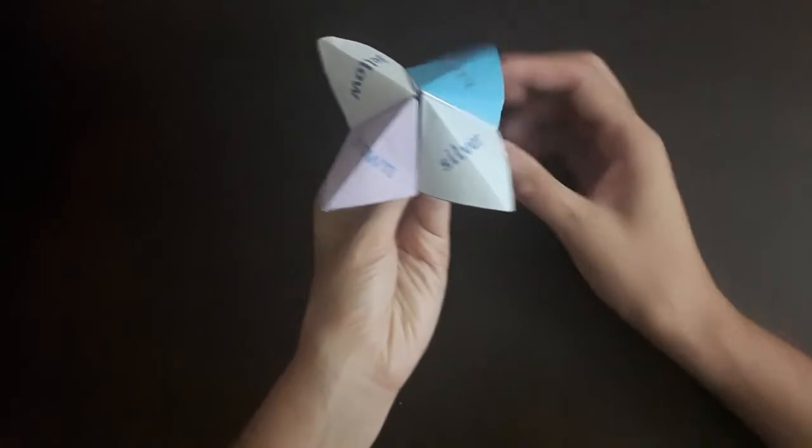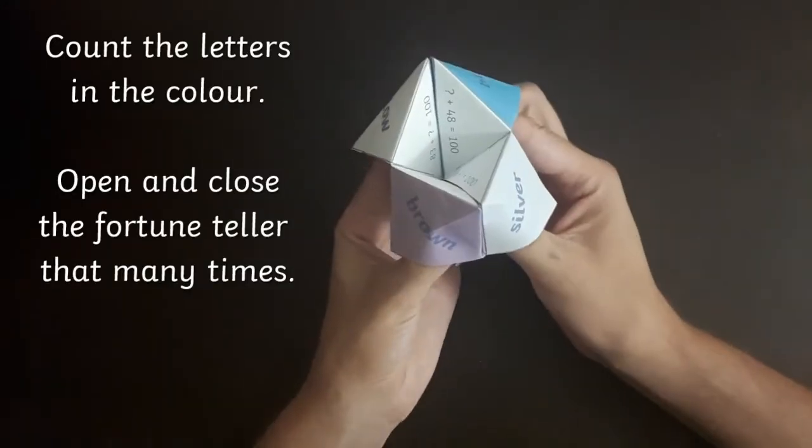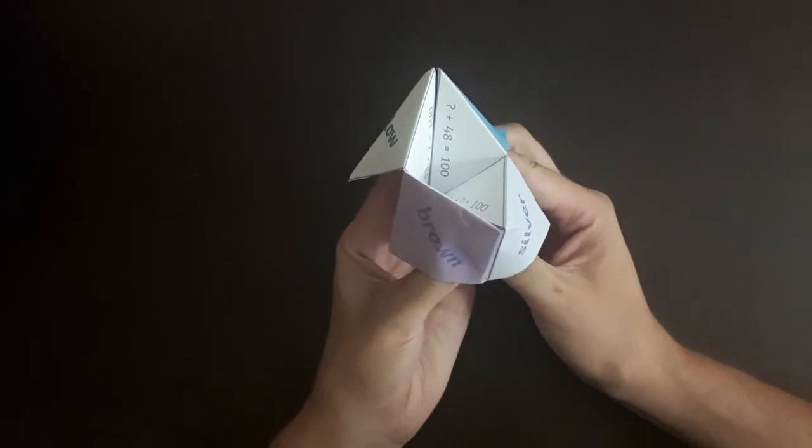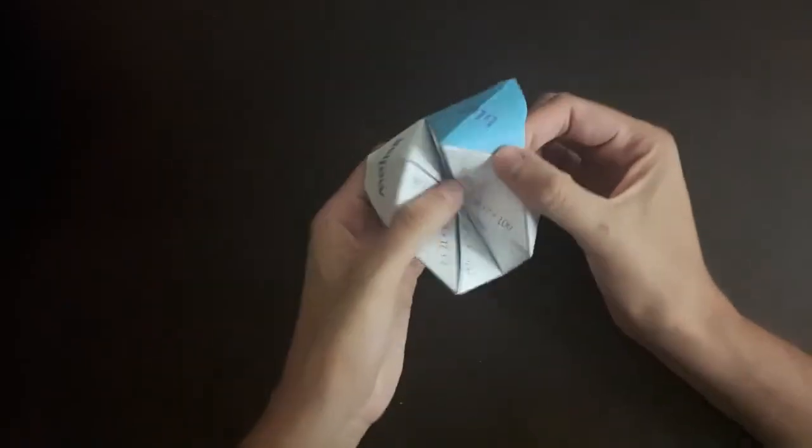Learners can pair up and ask their partner to choose a color, then an equation where they need to work out the second number needed to make up 100. After they respond, you can reveal the answer by lifting the flap and looking underneath.